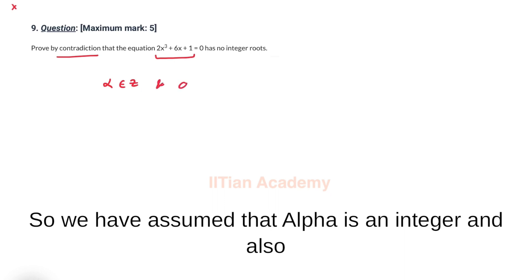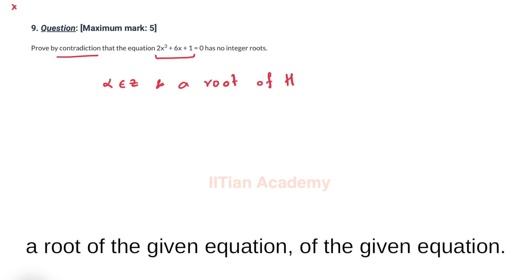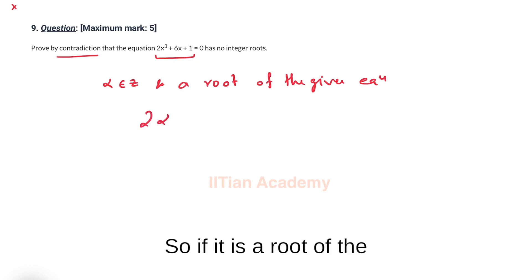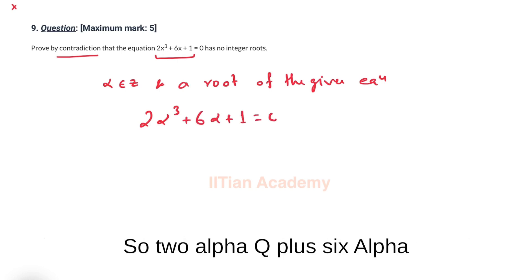So we have assumed that alpha is an integer and also a root of the given equation. So if it is a root of the given equation, it must satisfy the given equation. So 2 alpha cube plus 6 alpha plus 1 must be equals to 0.